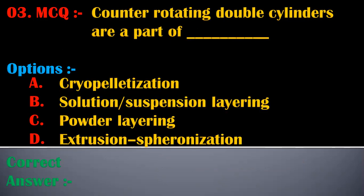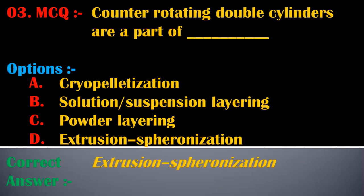Third MCQ: counter rotating double cylinders are part of — options are: A) cryopelletization, B) solution suspension layering, C) powder layering, D) extrusion spheronization. The correct answer is D, extrusion spheronization. Counter rotating double cylinders are a part of extrusion spheronization.